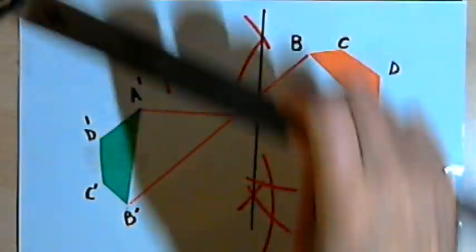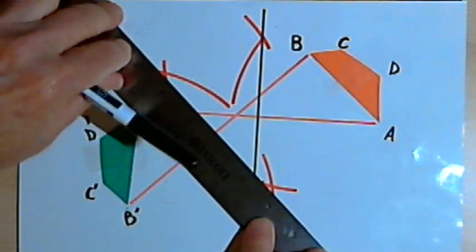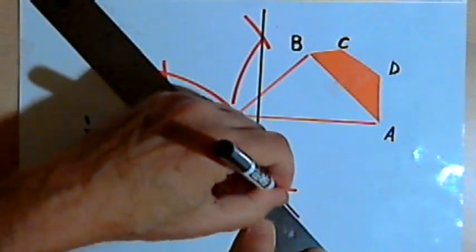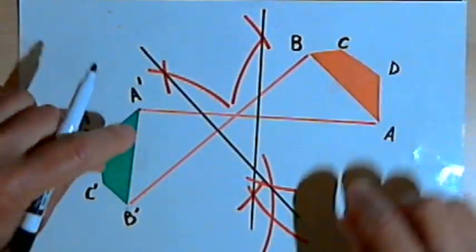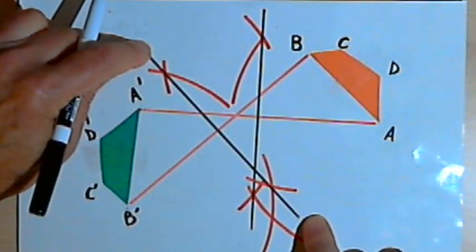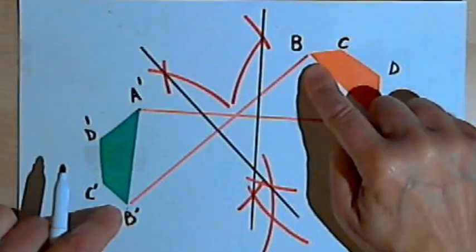And I'll take the places where those arcs intersected, connect them, and now I've got a second perpendicular bisector, that's the perpendicular bisector to line segment B, B-prime.